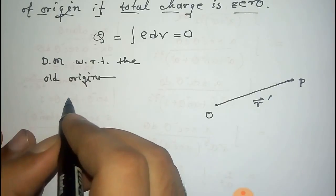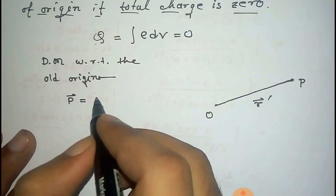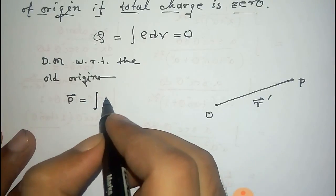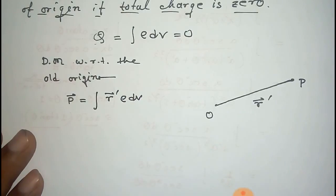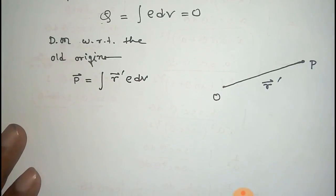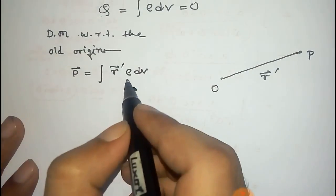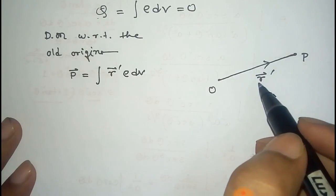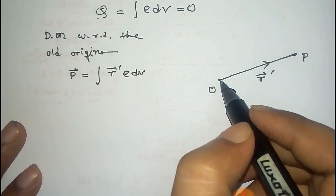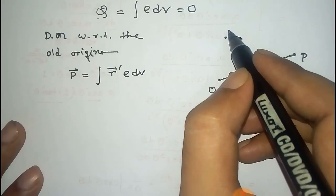Now the dipole moment with respect to the old origin, that is the old coordinate system, will be P vector equals integral r vector prime into charge ρ dv. ρ is the charge density in the r vector direction.